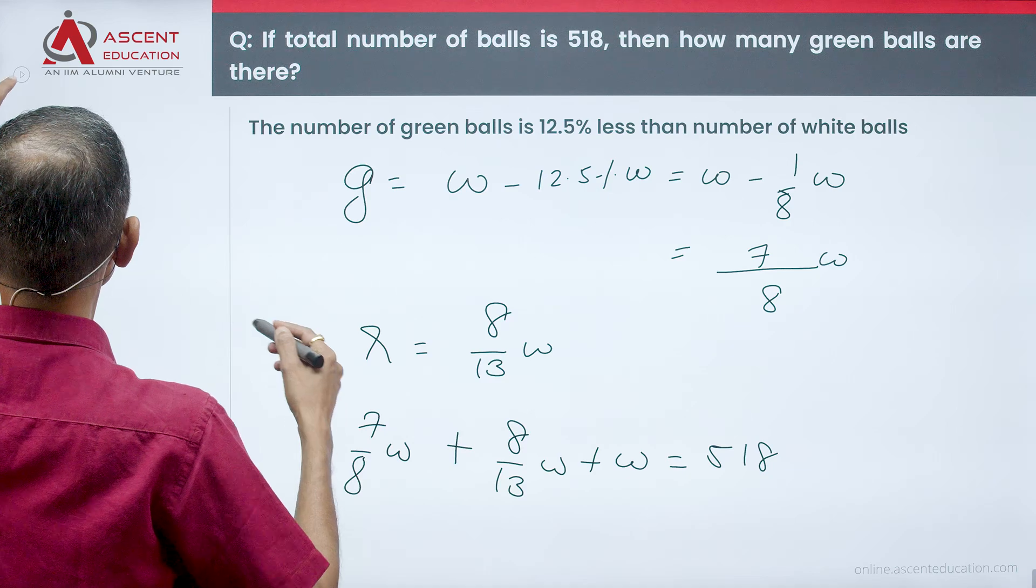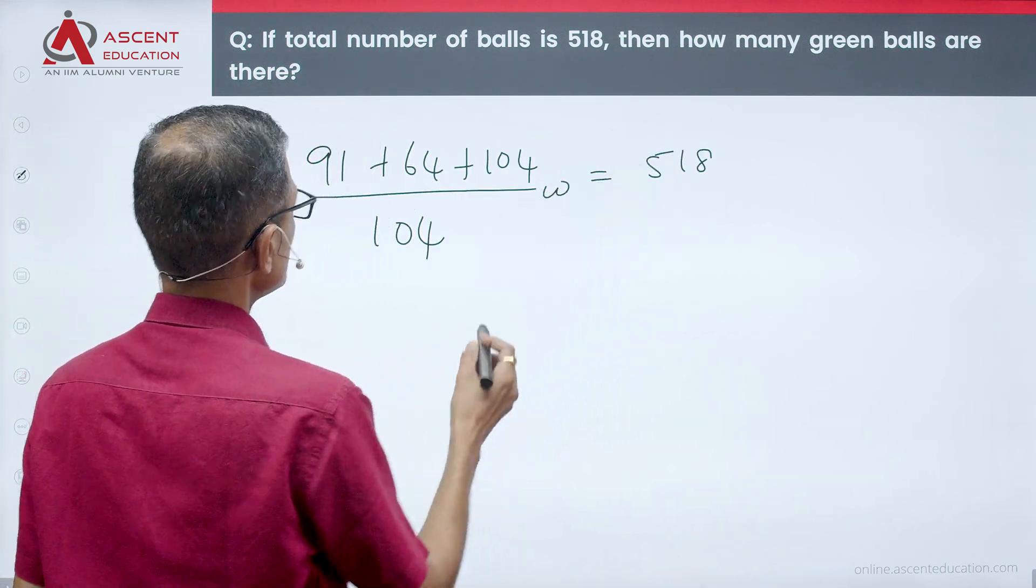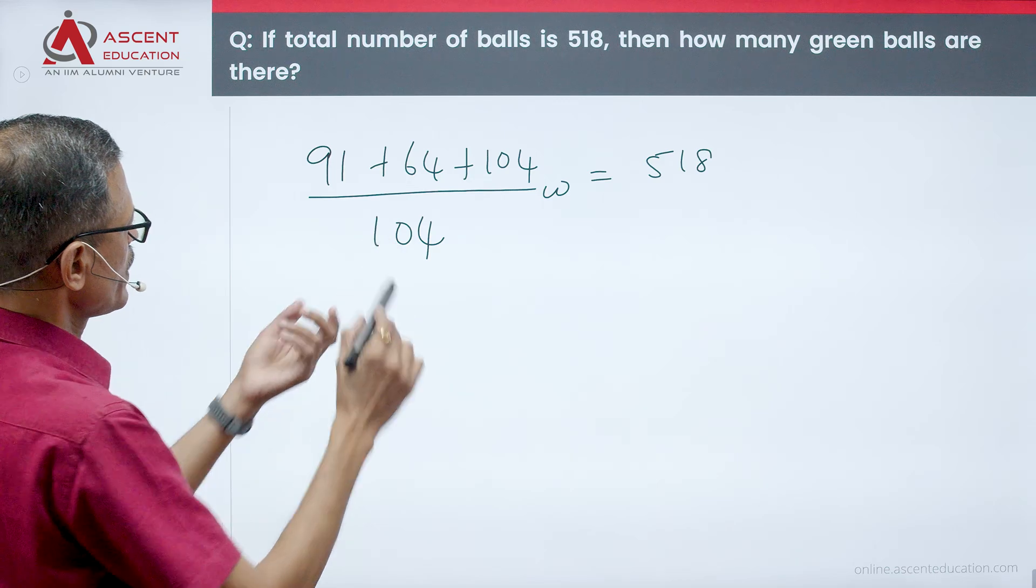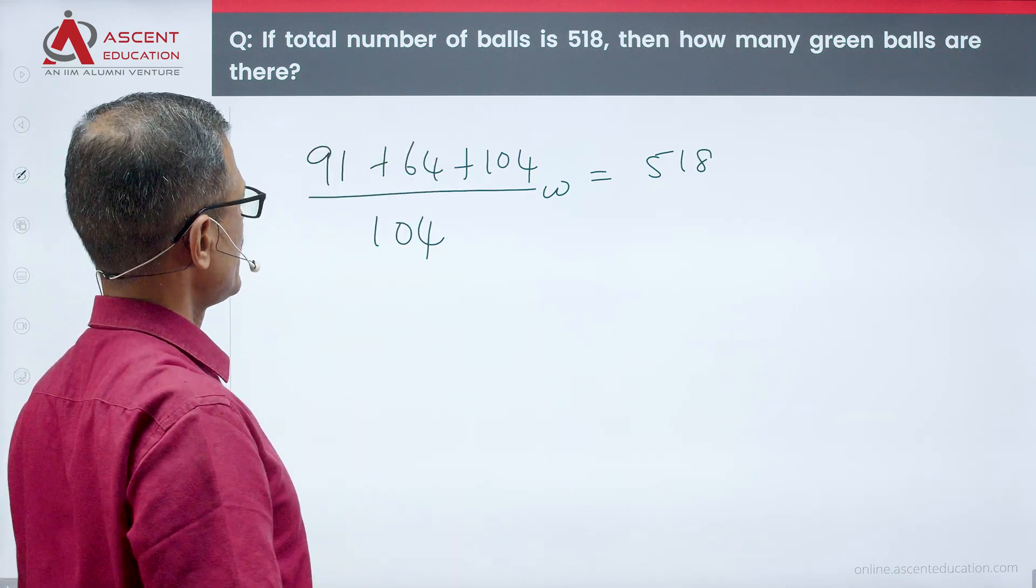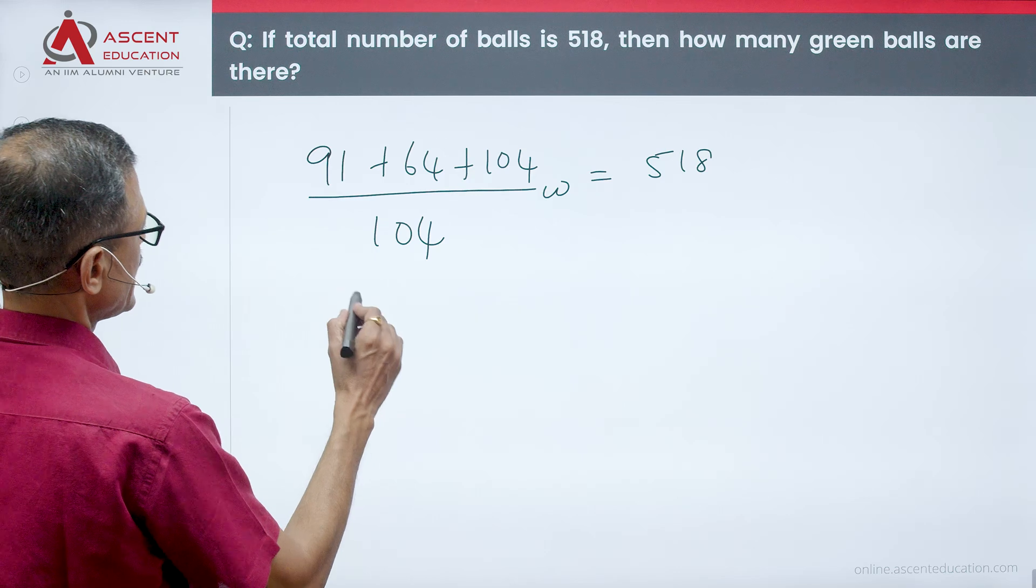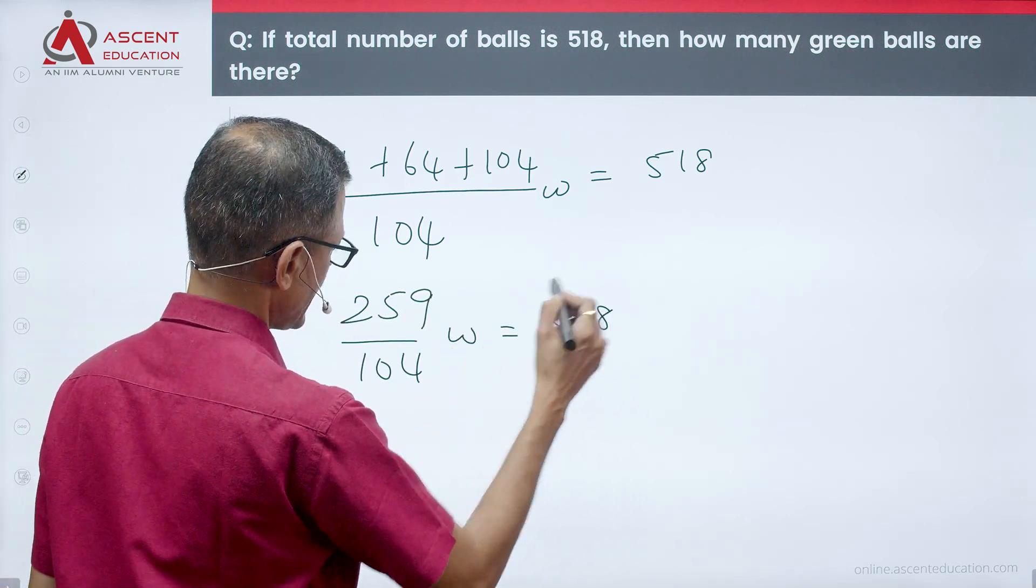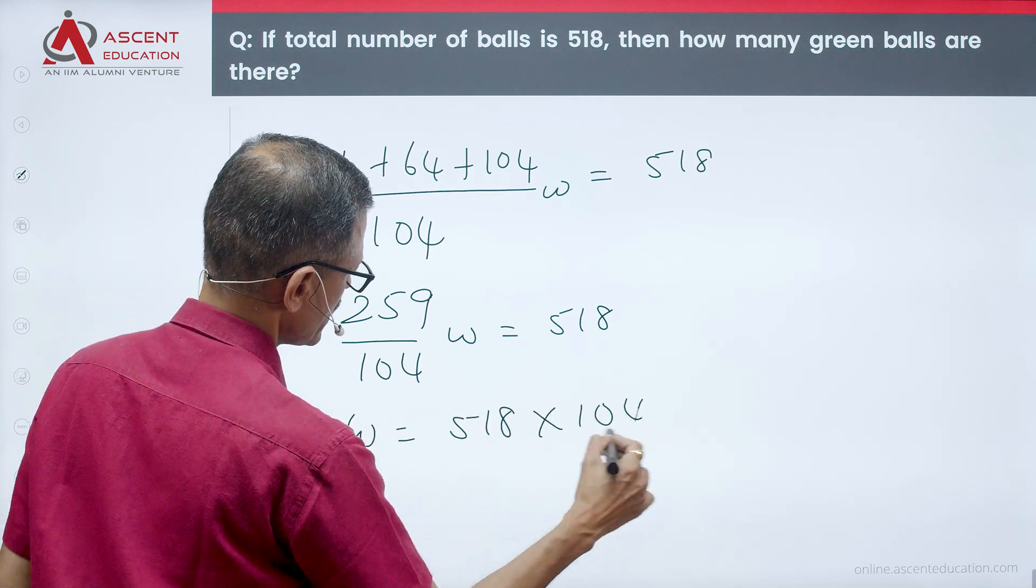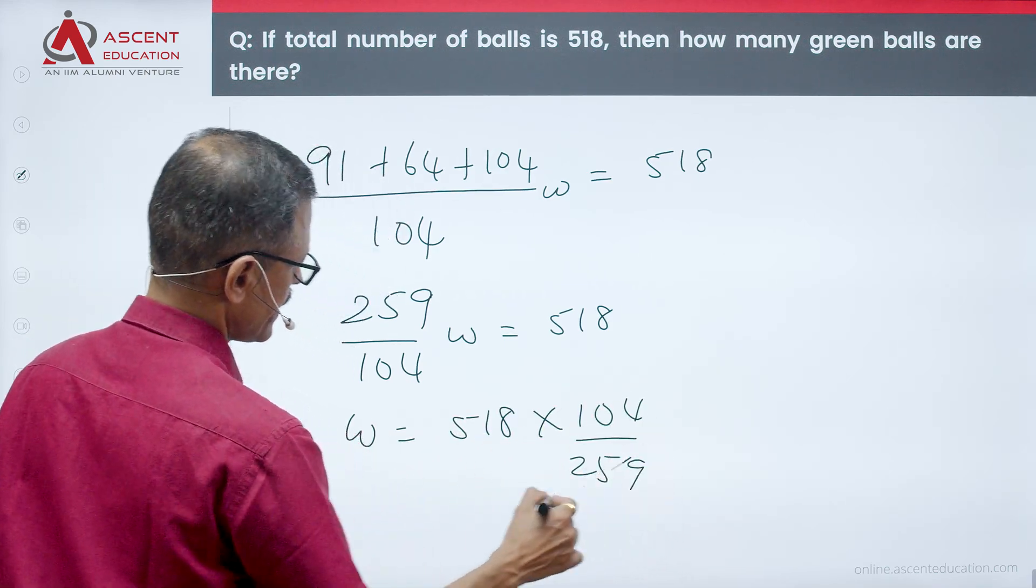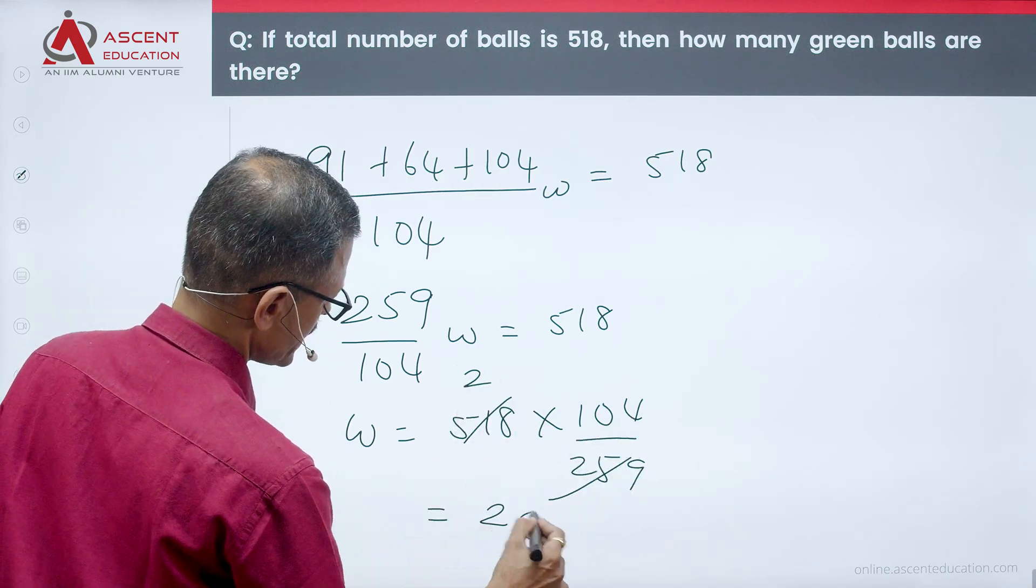This is equal to 518. W. So, 91 plus 4, 95, 155. 155 plus 100, 255, 259. 259 by 104 W is equal to 518. So, W is equal to 518 into 104 divided by 259. Cancels out as a 2. W is equal to 208.